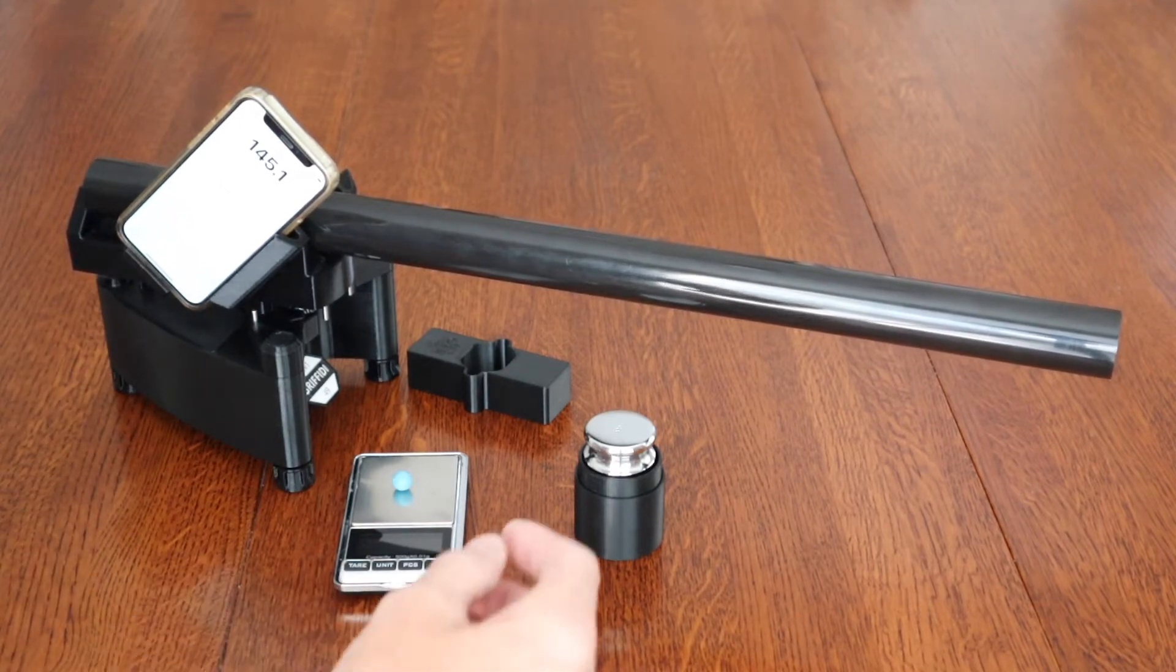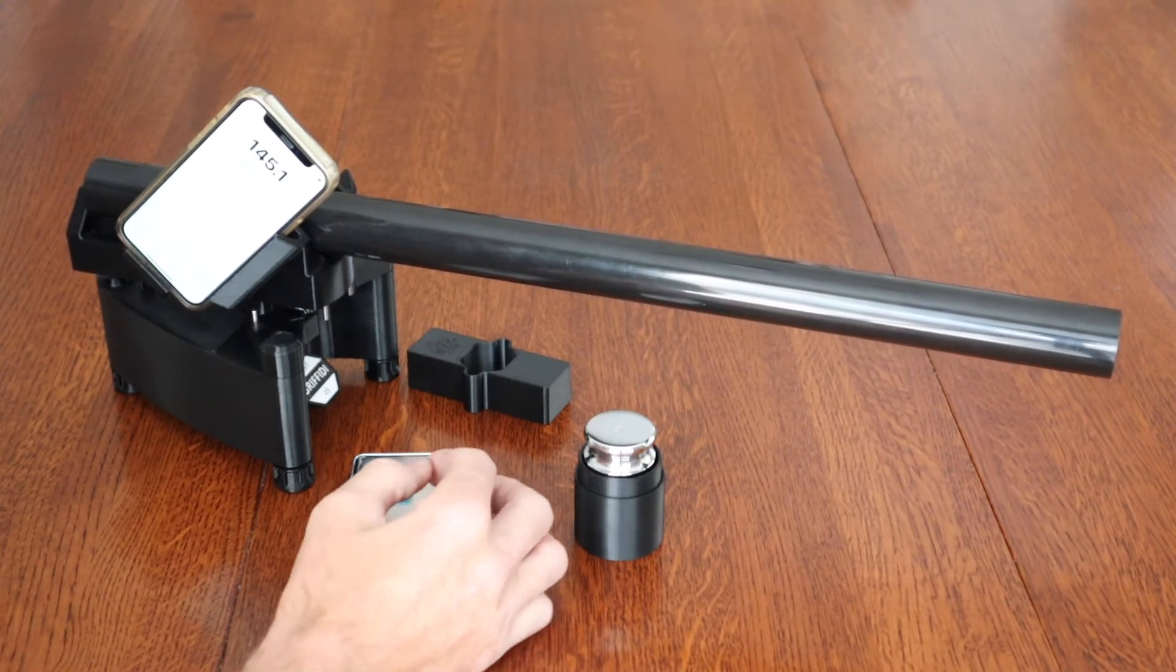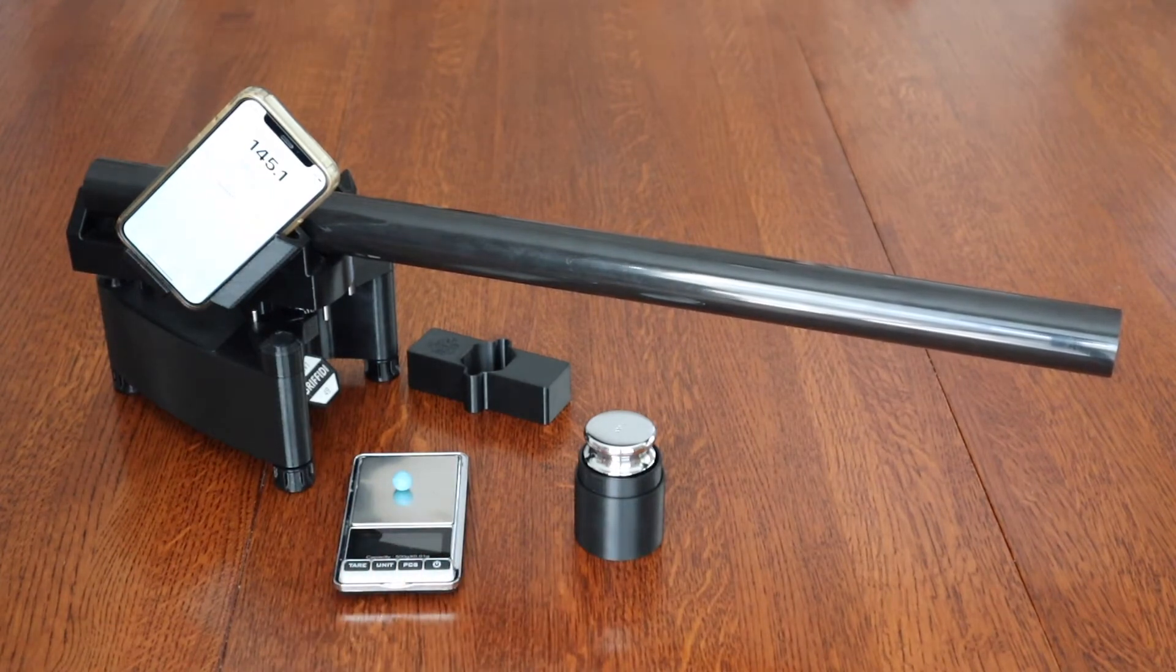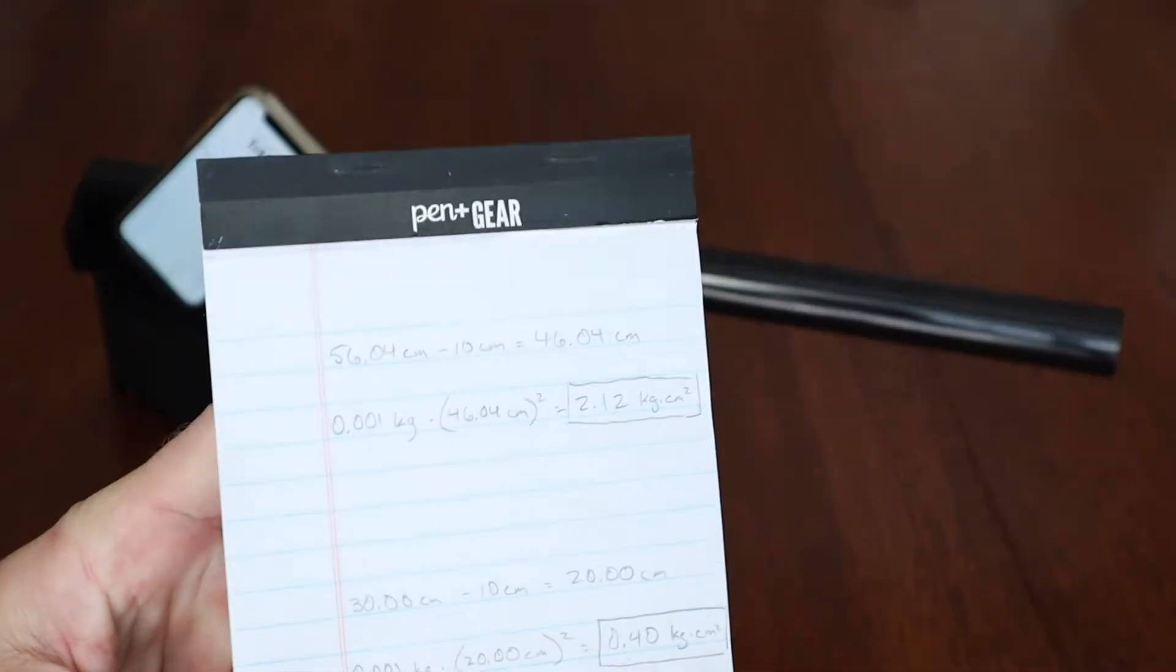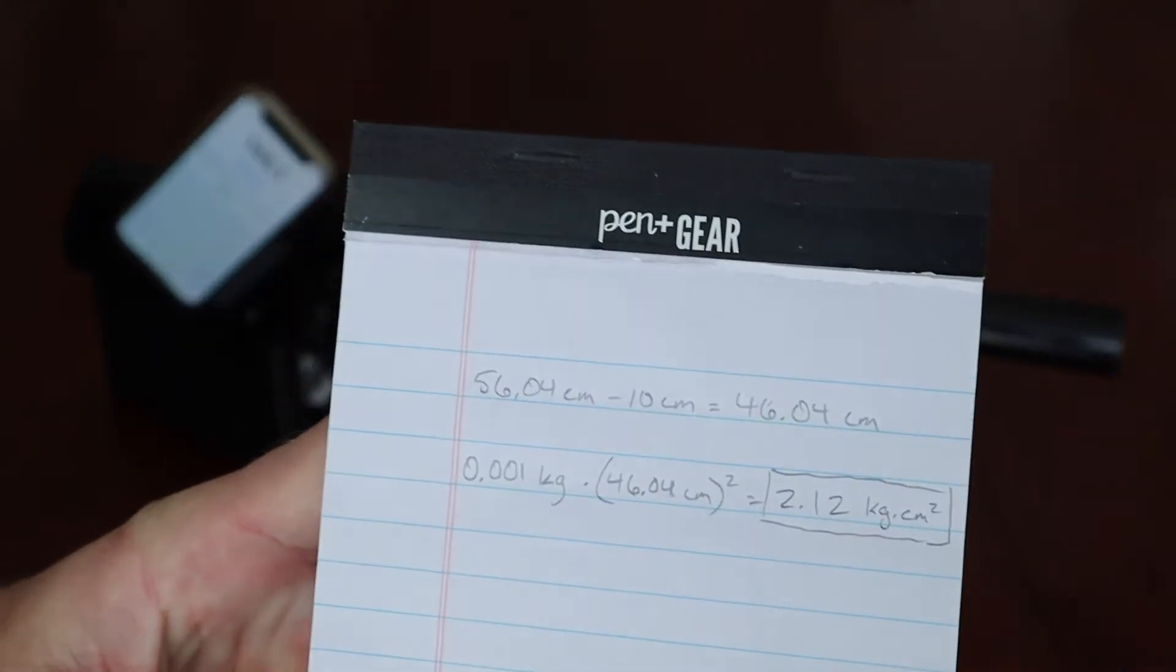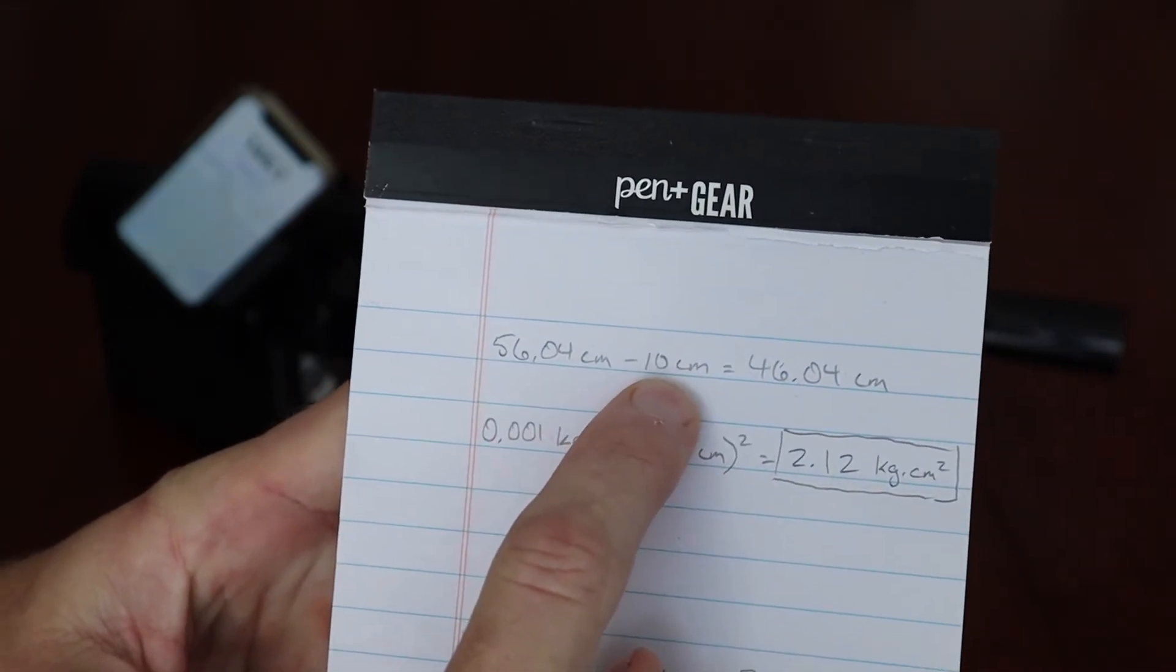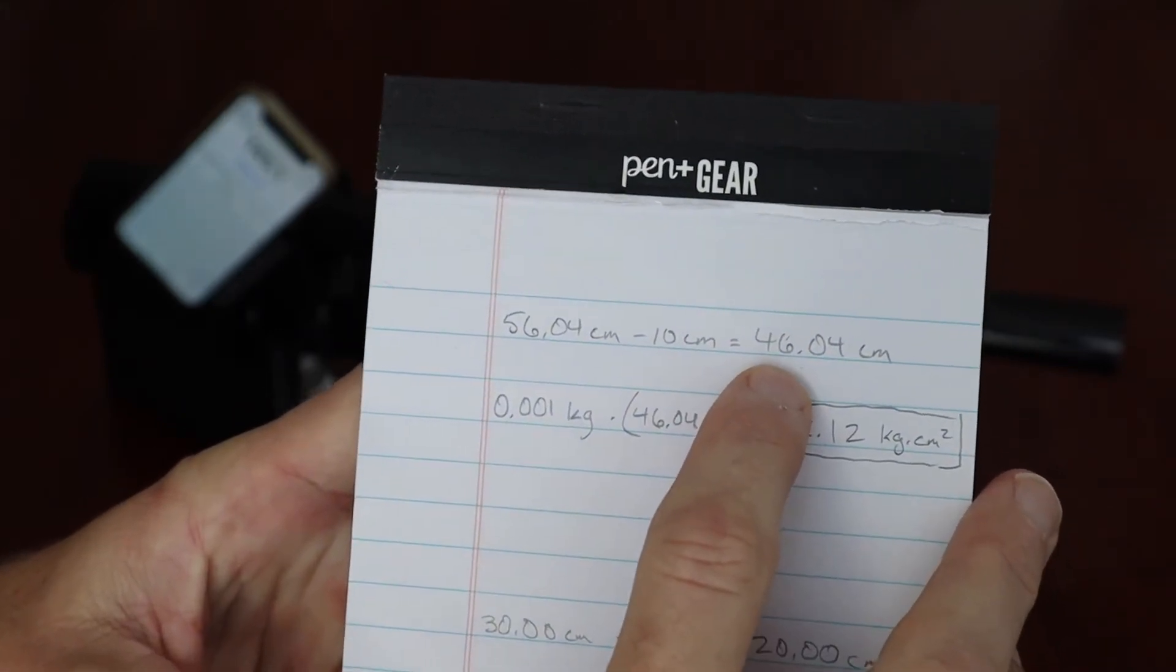So now if I take this one gram ball of Blu-Tac, I've got the calibration rod, which I've previously measured precisely, and that's 56.04 centimeters. So looking at this, it's 56.04 centimeters minus the 10 centimeters from the butt to the pivot point. So that's 46.04.